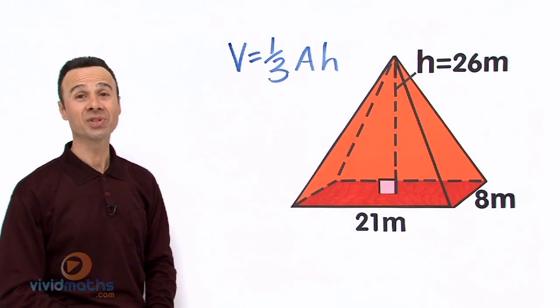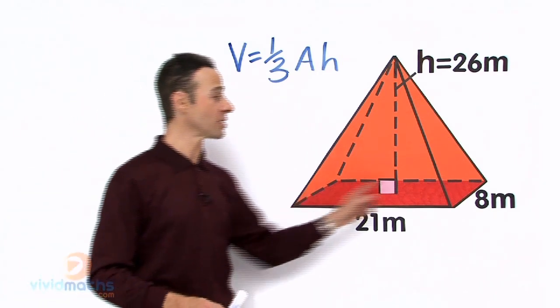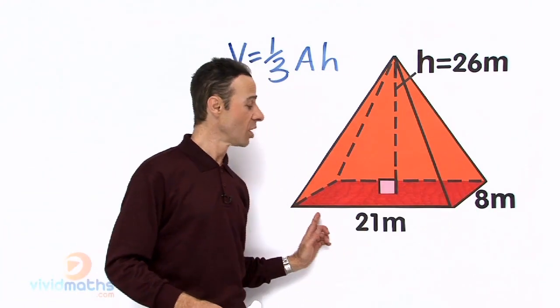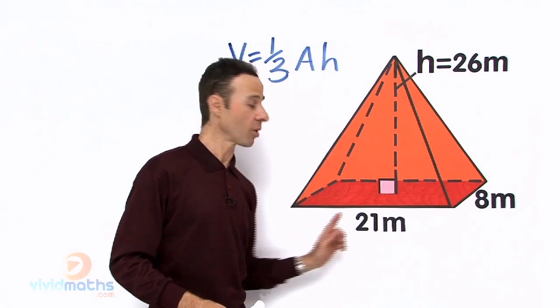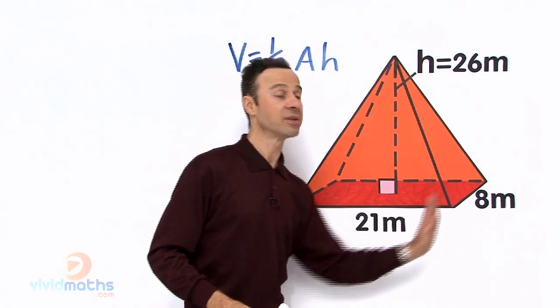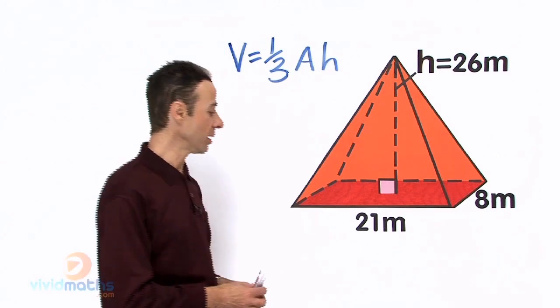Now let's go into step number 2, which is to work out the area of this base. Now it is a rectangular base because we can see that the base is a length of 21 meters and the depth is 8 meters. So let me just work it out down here.